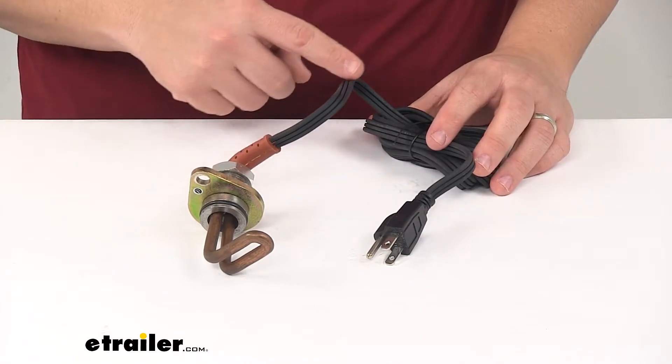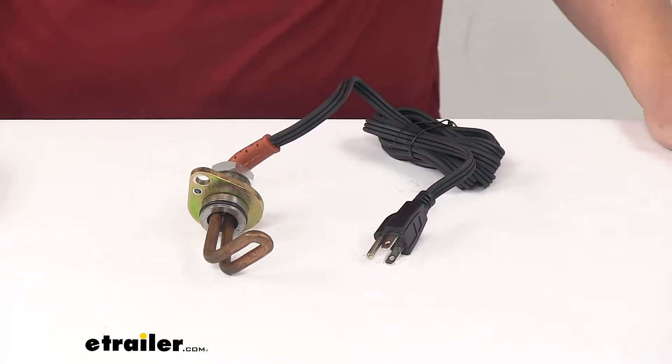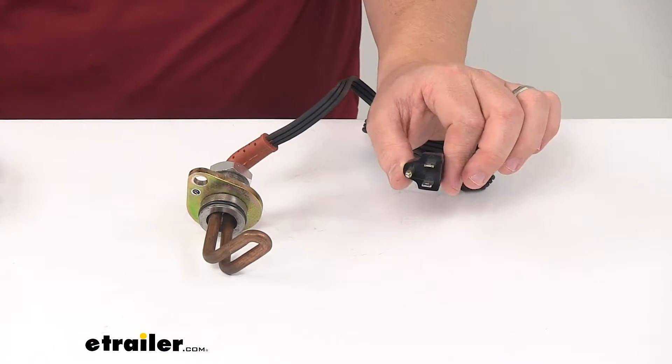It does come with the removable power cord, so you can route that through your grill and plug it into a standard 120 volt AC outlet.